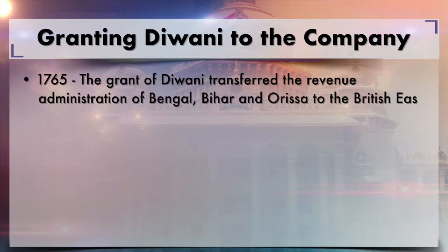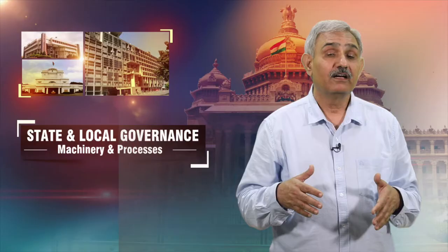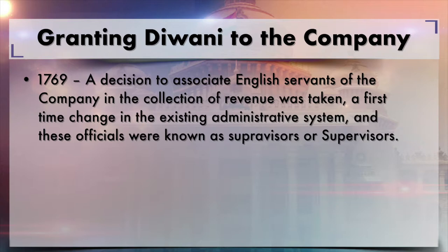The history of district administration during the British period began in 1765, when the British East India Company was granted the rights of Diwani in Bengal, Bihar, and Odisha. The company's interest was limited to the superintendence of revenue collection and disposal rather than actual administration. In 1769, a decision to associate English servants of the company in revenue collection was taken, and these officials were known as supervisors.